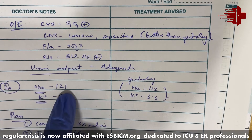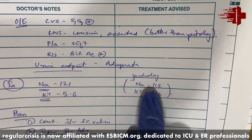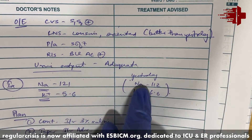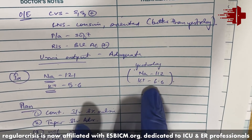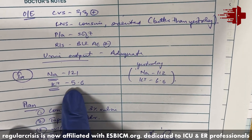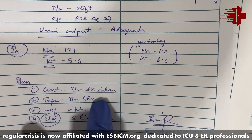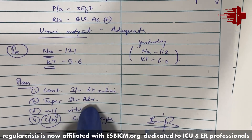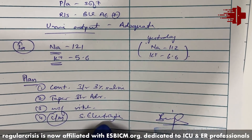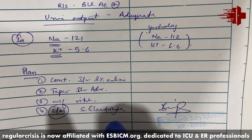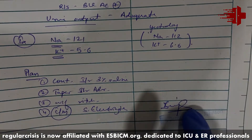Investigations: sodium is 121 today — yesterday it was 112, so a rise of 9, which is fair enough in 24 hours. Potassium yesterday was 6.6 and today is 5.6, which is good. Today's plan: continue with 3% saline, try to taper off adrenaline, watch vitals, and in the morning repeat electrolytes to see the levels. Then we will decide whether this patient needs to be kept in the ICU or not.